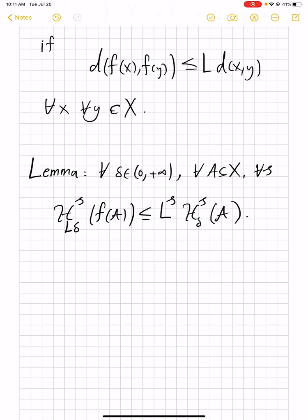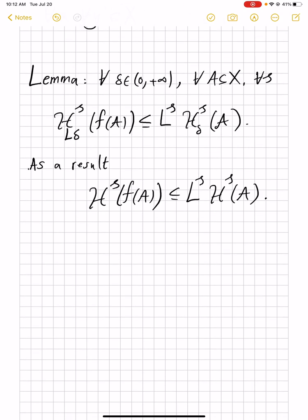So if you let delta go to zero, what we get is that the Hausdorff measure of f(A) is less than or equal to L to power S times the Hausdorff measure of the domain. This second formula is nicer because it doesn't deal with the deltas, but the proof has to go through that.